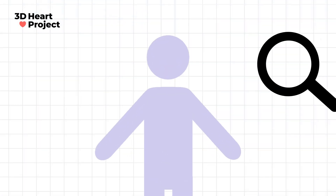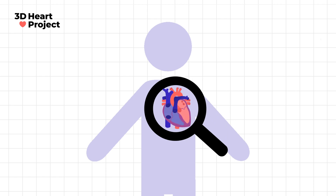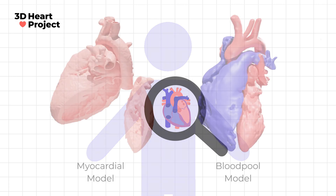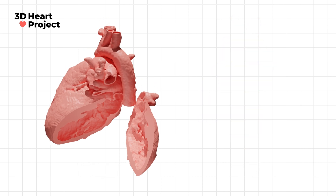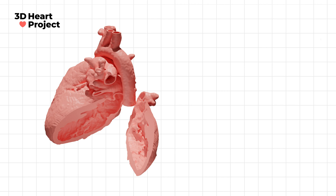The models will be shown to you as if you are looking at the heart inside the body of someone in front of you. Each 3D model of the heart can be made to show either the muscle of the heart or the blood contained within the chambers. Today we are going to be using a model that shows the muscle surface, which is called a myocardial model, because the muscle that creates the walls of the heart surface is called the myocardium.